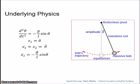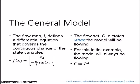The general model consists of a flow map, flow set, jump map, and jump set. We start first with the flow map F, which defines a differential equation that governs the continuous change of the state variables. The flow map is represented as a column vector of two elements: the first element is x2, corresponding to theta dot, and the second element is g over L sin theta, corresponding to theta double dot.